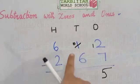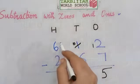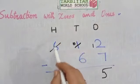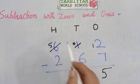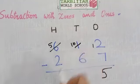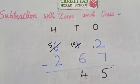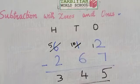Now 0 minus 6 is not possible, so we take borrow from 6 hundreds. 6 hundreds will become 5 hundreds and 0 tens will become 10 tens. 10 minus 6 is 4, and 5 minus 2 is 3. So the answer is 345.